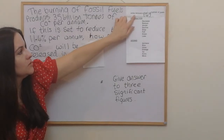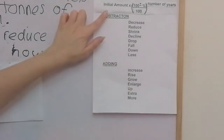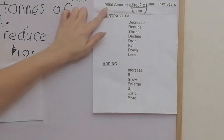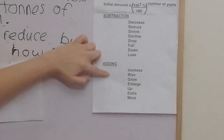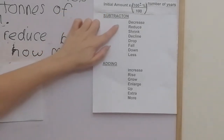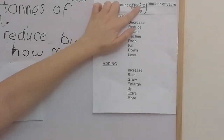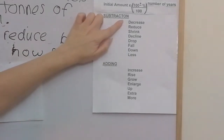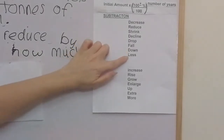This is the formula that we're going to use — you can copy it down. This is the formula for compound percentages. Underneath, I've listed the words you're going to hear when you need to do a subtraction — when it's 100 take away the percent. These are the sort of words you'll hear: decrease, reduce, shrink, decline, drop, fall, down, less.